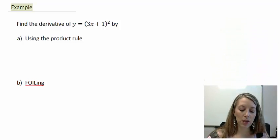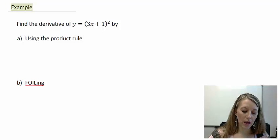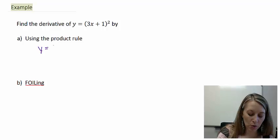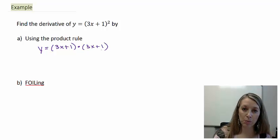y equals (3x + 1) quantity squared. We can take the derivative of it by doing the product rule, or we can FOIL it out completely and take the derivative using the four shortcut rules. I suggest that you pause the video and take the derivative of this on your own. To take the derivative using the product rule, we have to write out what the product actually is — so it's (3x + 1) times (3x + 1).